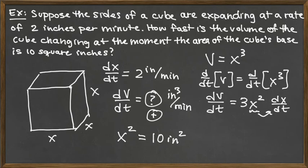When we're looking at trying to figure out what our final answer is, we're looking for dv/dt. We actually know exactly what x squared is because x squared was the area of the cube's base. So we know that to be 10, and we can plug 10 in directly for x squared. And we also know that dx/dt is 2. So we can get our final answer then by plugging in those values – dv/dt is equal to 3 times 10 for x squared, and 2 for dx/dt.